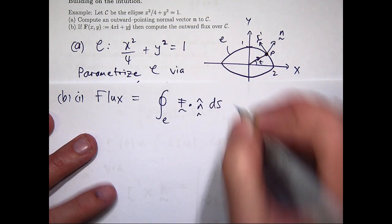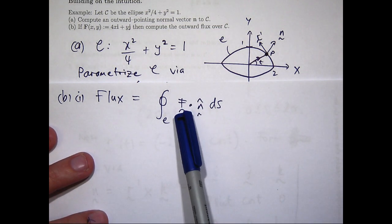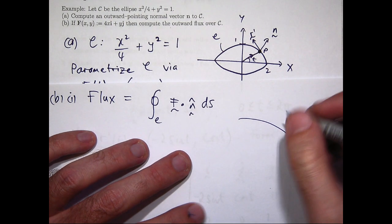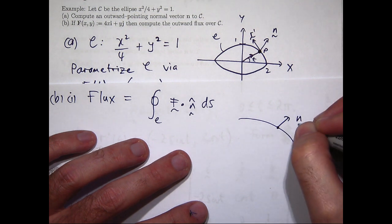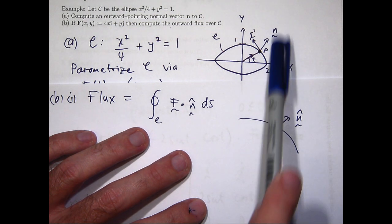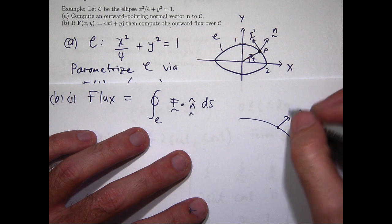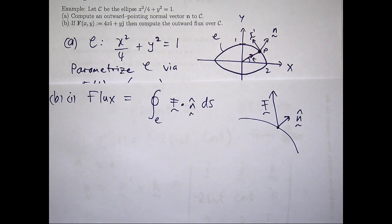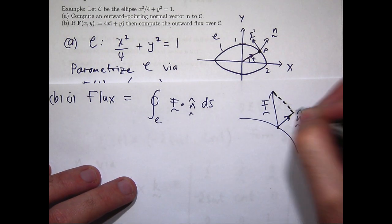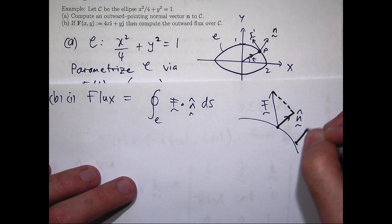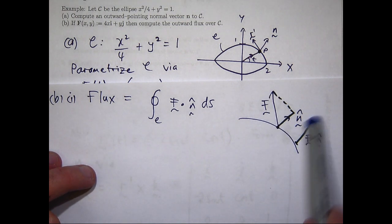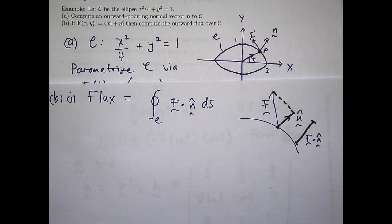It's a line integral. And essentially, it's the normal component of F that is integrated around the curve C. So what do I mean by that? Well, let's just draw part of the curve here. At each point, I'm going to have a unit normal vector. Now this vector that we calculated up here isn't necessarily a unit vector, but here we've got a unit normal vector, an outward pointing unit vector, a unit normal vector. At every point, I'm going to have some value for my F. And then if I just draw a little triangle, right angle triangle, the length of this side here is the normal component of F.